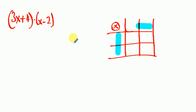Okay, we have another example: 3x plus 4 times x minus 2. We are going to multiply these two factors and reach our answer.